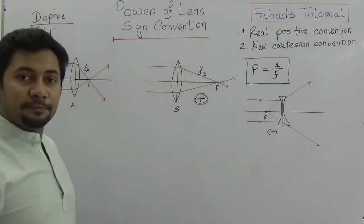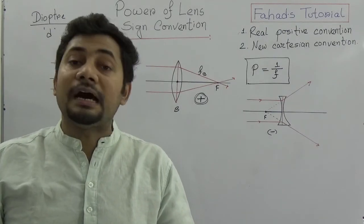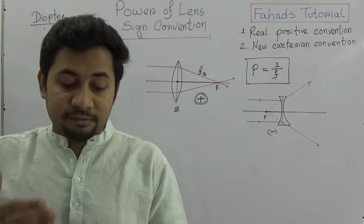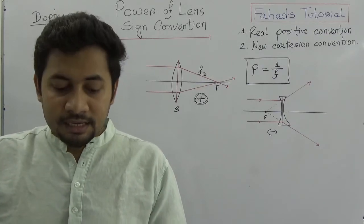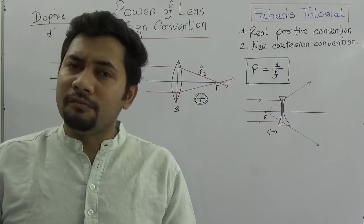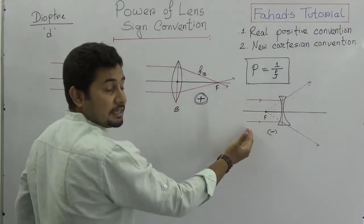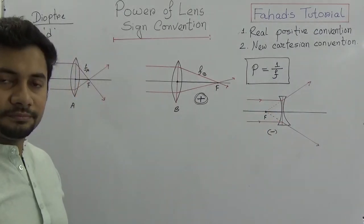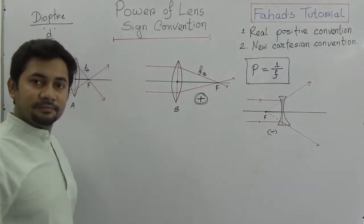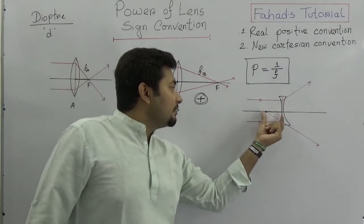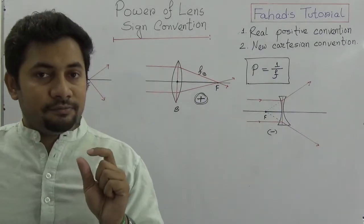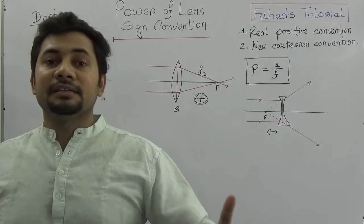In the case of a convex lens, all the distances are positive. In the case of a concave lens, all virtual distances are negative. A virtual distance is one which is not actually covered by the ray, but it appears that the ray has covered that distance. The distance of a virtual object, a virtual image, and a virtual focus are all taken as negative.